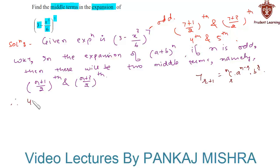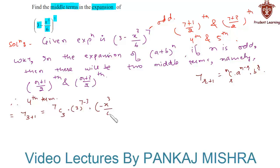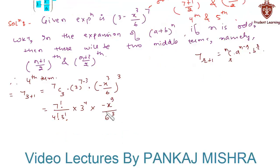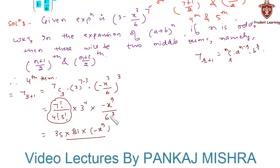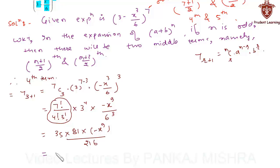The 4th term equals T(3+1), which is 7C3 into 3 raise to (7 minus 3) into (minus x cube upon 6) raise to 3. This equals 7 factorial upon (4 factorial into 3 factorial) into 3 raise to 4 into (minus x raise to 9 upon 216), which finally gives us minus 105 x raise to 9 upon 8.